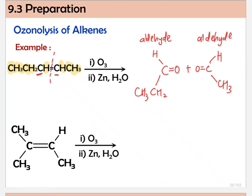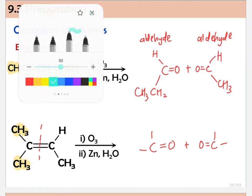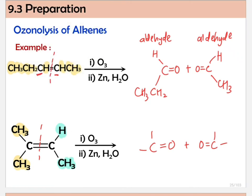For the second example, cleavage again occurs at the double bond. We write C=O plus C=O. For one carbon, we have CH3 and CH3, and for the other carbon, we have hydrogen and CH3. Make sure you are bonded with the correct carbon. So here, one product is a ketone and the other is an aldehyde.